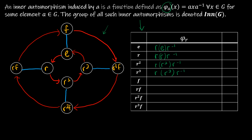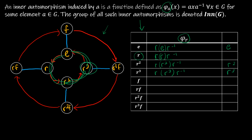Let's look at the rotations first. Starting at E: R·E·R⁻¹ takes us back to E, so E maps to E. For R: R·R·R⁻¹ gets us back to R, so R maps to R. Similarly, R·R²·R⁻¹ gives R², and R·R³·R⁻¹ gives R³. So for this inner automorphism, all rotations map to themselves.